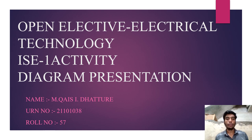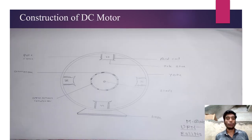Hello, my name is Kais Dhatturi. Today I am giving an open electrical technology IC1 activity diagram presentation. My roll number is 57. My topic is the construction of a DC motor, as you can see in the diagram.